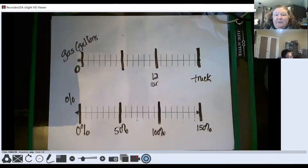Okay, so we're going to capture some of our conversation so far. We had blank number lines, and we took the top one and we're labeling it for our problem, which is gallons of gas, and we made our bottom number line percents.